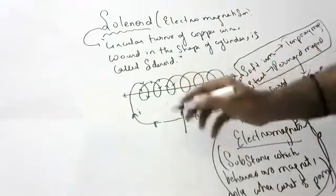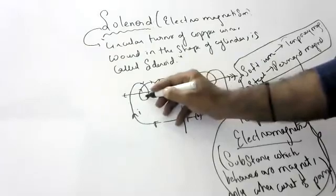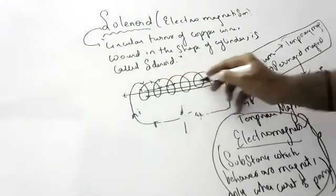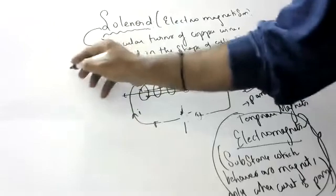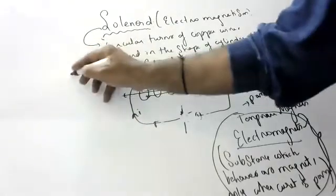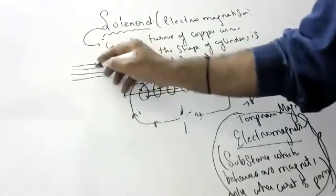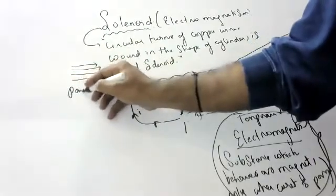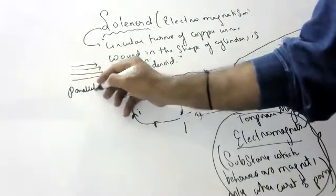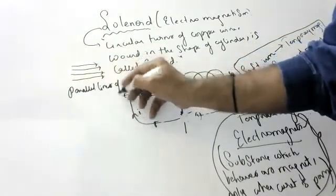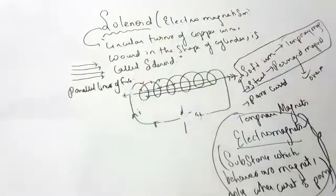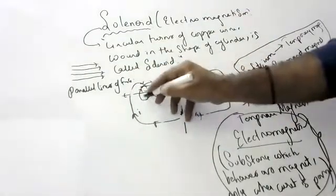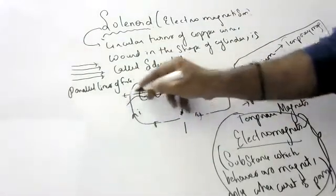Inside the solenoid, the magnetic field is uniform. A uniform magnetic field is represented by parallel lines of force — uniform parallel lines indicate a uniform magnetic field.